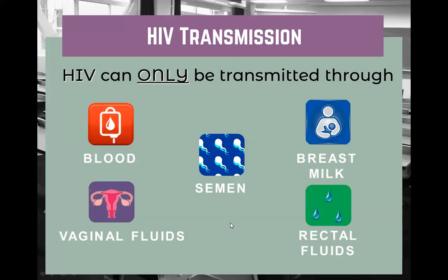Now, transmission. How is HIV transmitted? These are the five fluids that transmit HIV: blood, vaginal fluids, semen, breast milk, and rectal fluids. Rectal fluids used to not be considered a fluid that transmitted HIV until about a year ago, when the CDC added it to its list. There is some pretty good research to support this.